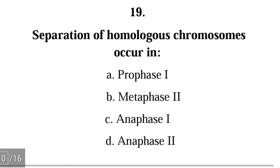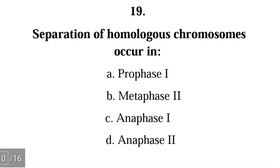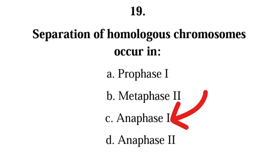Question 19: Separation of homologous chromosomes occurs in — A. prophase 1, B. metaphase 2, C. anaphase 1, D. anaphase 2? The correct answer is C, anaphase 1. Homologous chromosomes separate in anaphase 1.